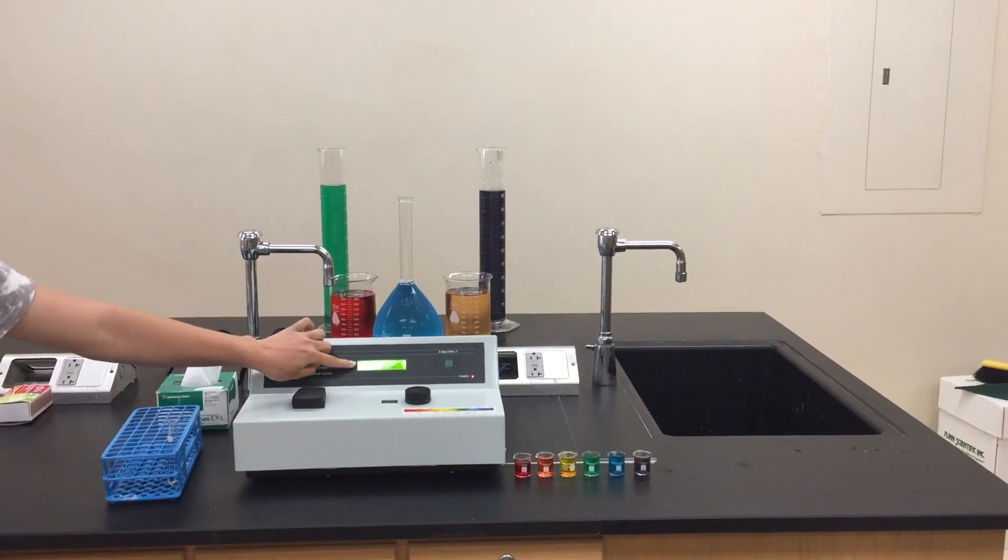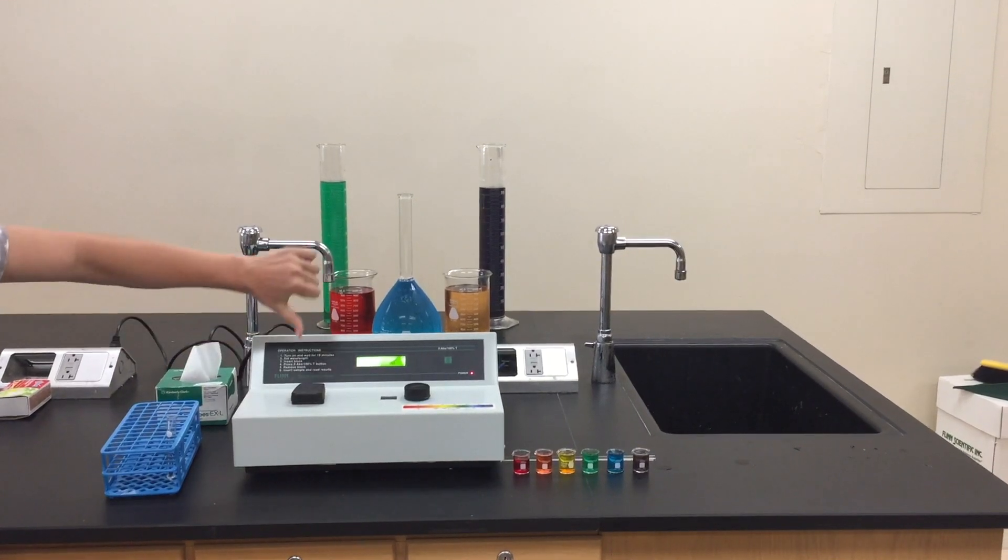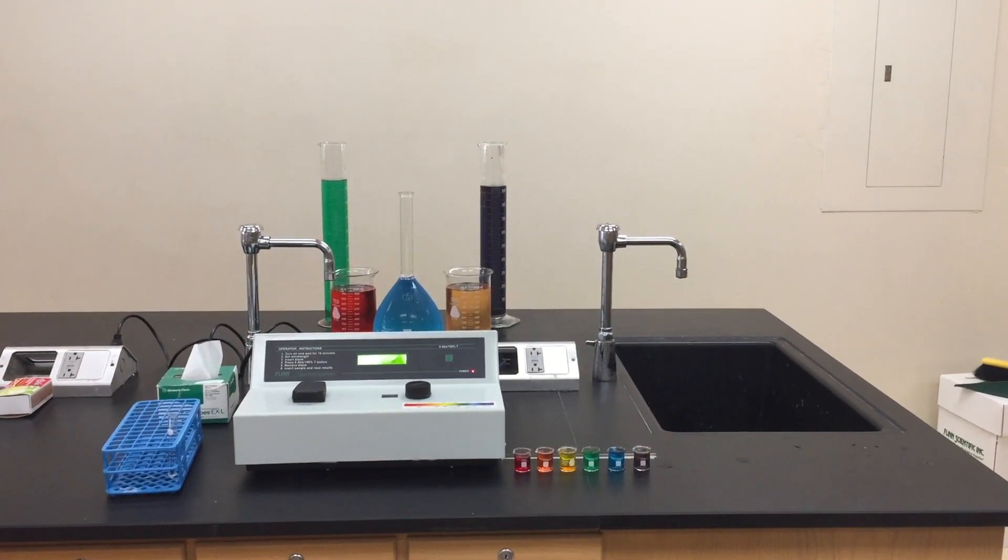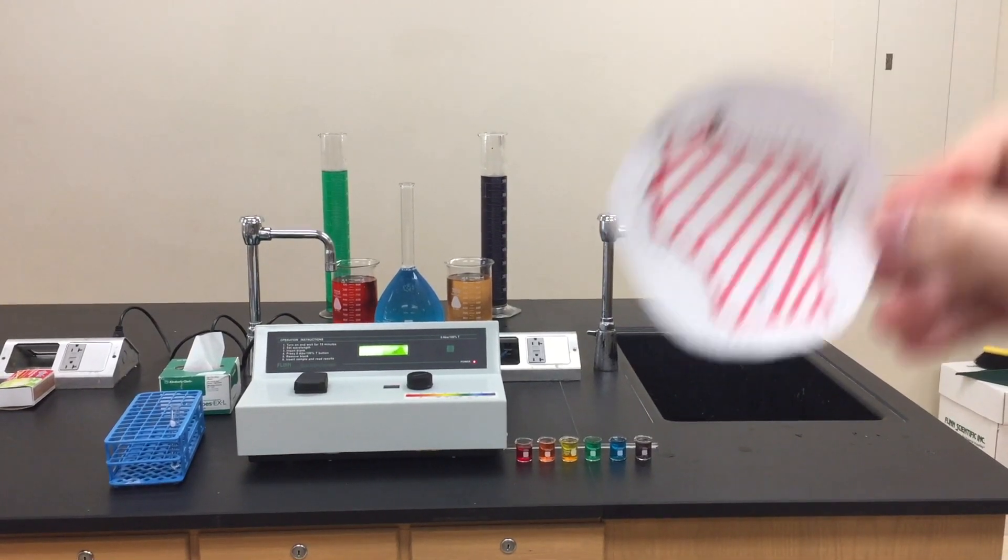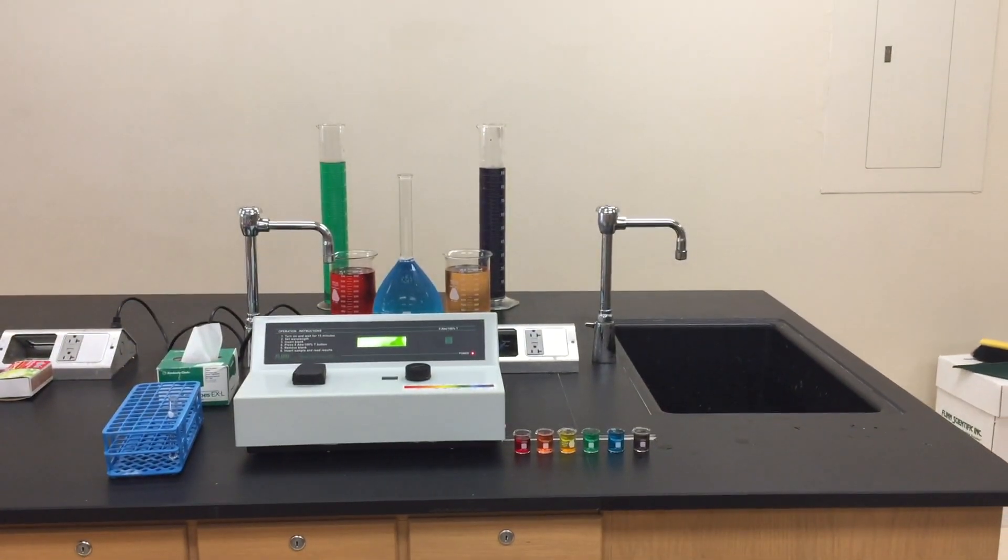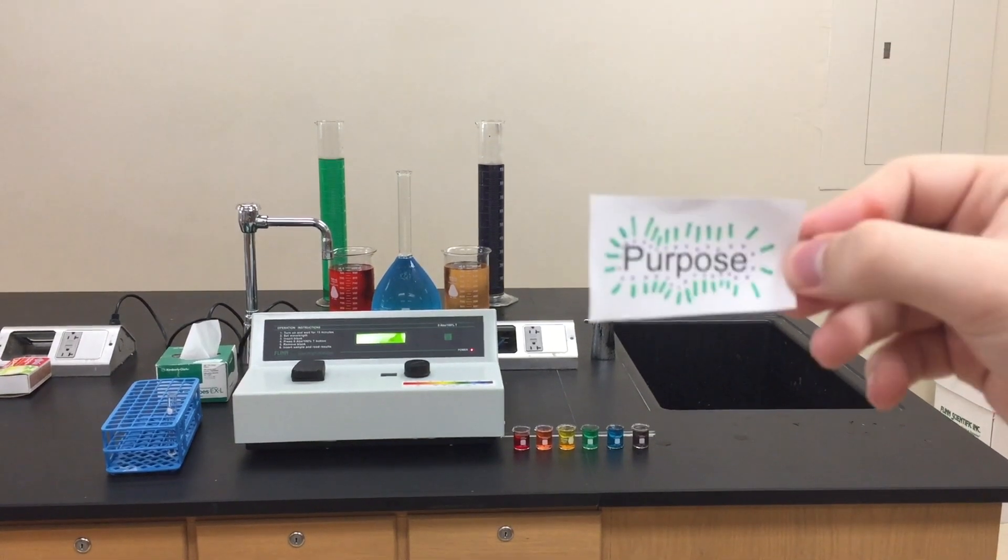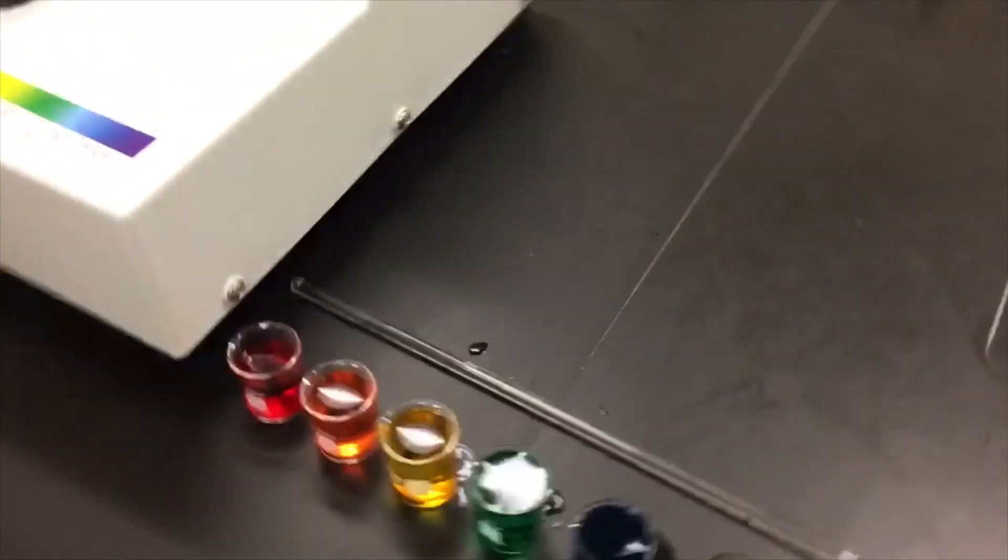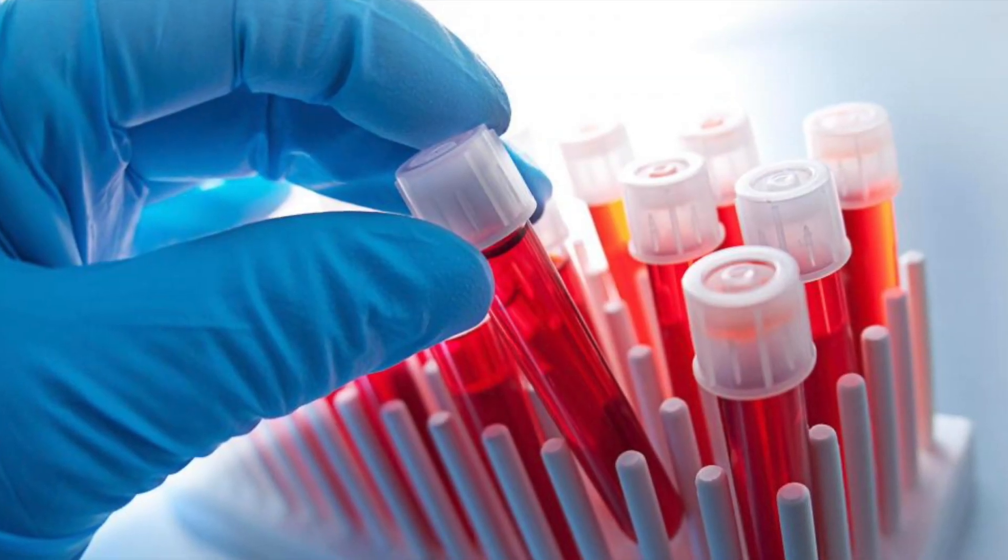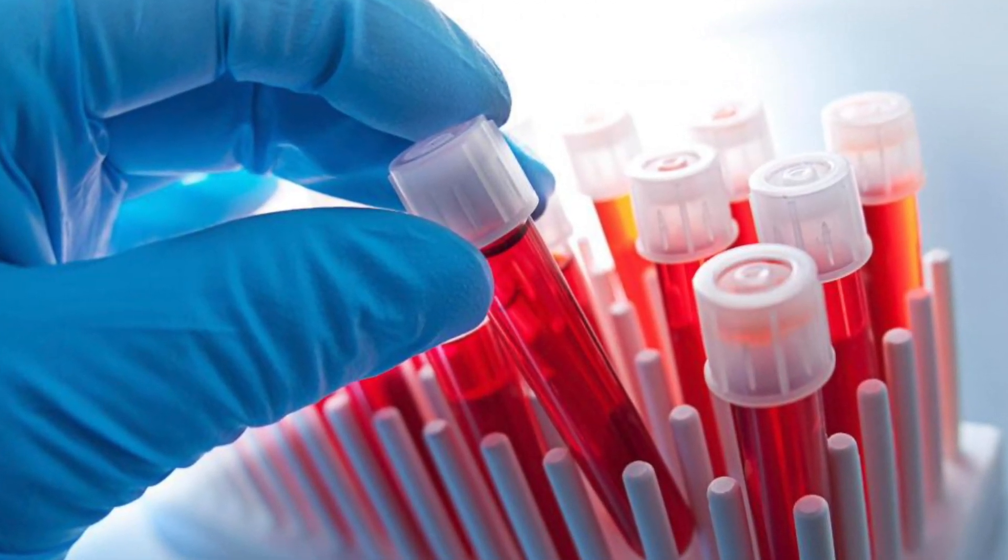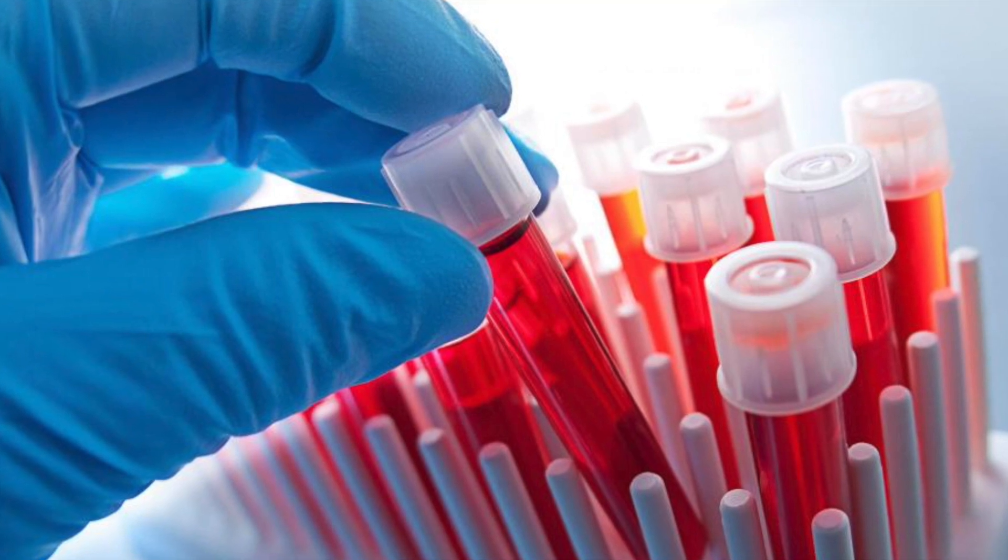The lower the absorbance, the more light was reflected. Interesting fact: the Spec 20 is now produced in Madison, Wisconsin. Spec 20s are useful for measuring reactions that result in changes in color and can also be used for hematology to measure the concentration of red blood cells. Have a good time. We hope you learned a lot.